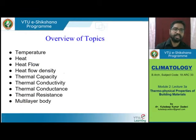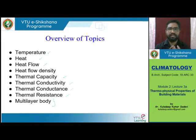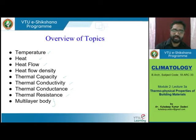What we are going to discuss here is temperature, which you would have covered in your first module. Then we will talk about heat and heat flow — how heat flow happens — and discuss heat flow density. Then we cover typical properties of a material: thermal capacity, thermal conductivity, conductance, and resistance. We will also see how this changes when two or three different layers of different materials are assembled together as a multi-layered body.